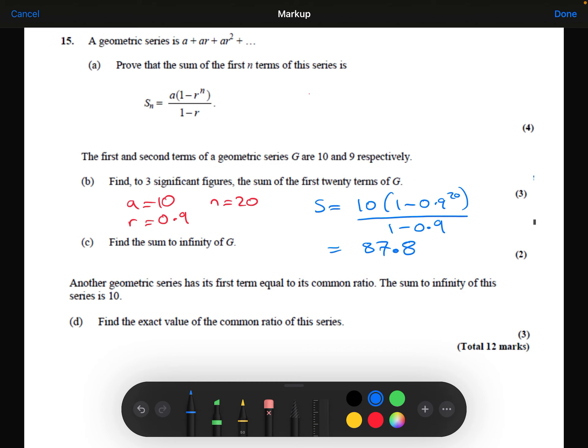Part C, we want to find the sum to infinity, which we can do in this case, because our common ratio is less than 1. So the sum to infinity does exist. So we can use the sum to infinity formula, which you do get given. It's A over (1 minus R). So A is 10 divided by (1 minus 0.9), and that's 100. So the sum to infinity is going to tend towards 100.